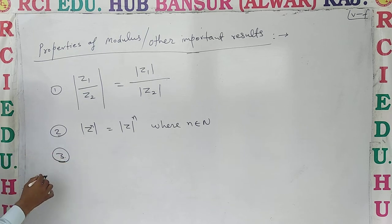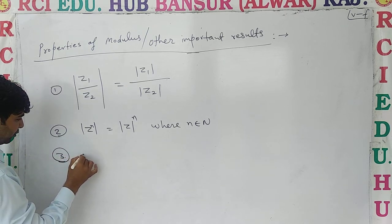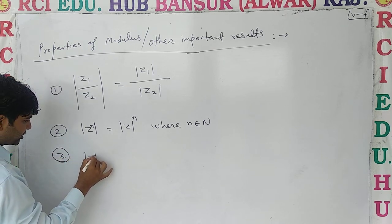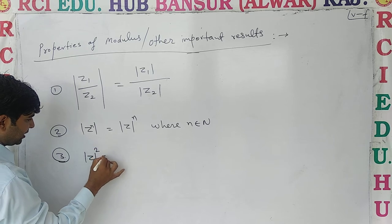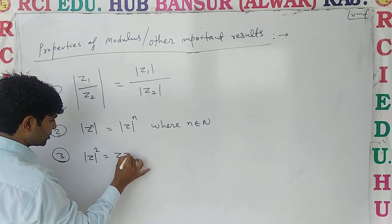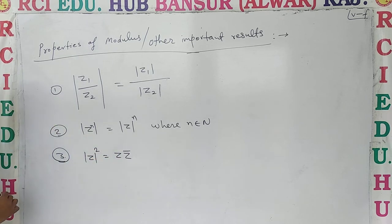तीसरा ध्यान दो: अगर कहीं भी आपको Mod Z का Square लिखा मिले, तो आप उसको Z·Z̄ (Z times Z Bar) बोलोगे।